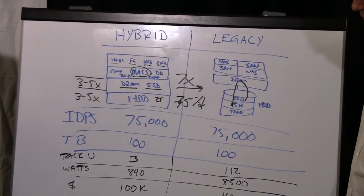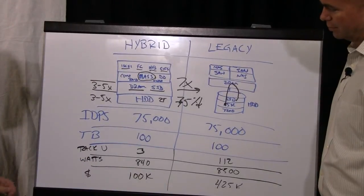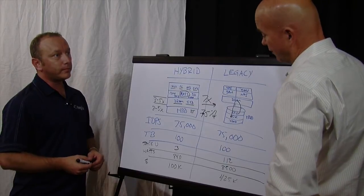And then from a pricing standpoint, this would list at $100,000 and this guy would list at about $425,000. There's some significant numbers out there. Yeah. That's a big difference.